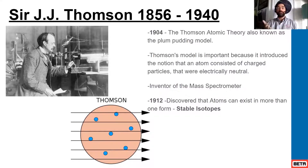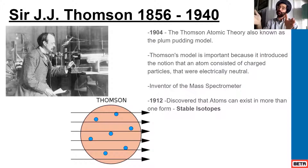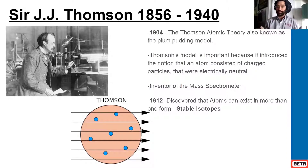He's also the first person to notice that if he changed magnetism, he could actually get a beam of what was pure gas to begin to move. So he's the first person to suggest that maybe there's such a thing as stable isotopes, or an atom existing in more than one form.